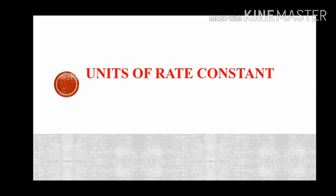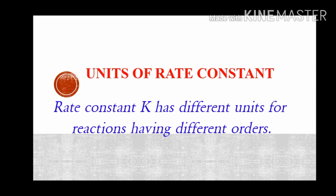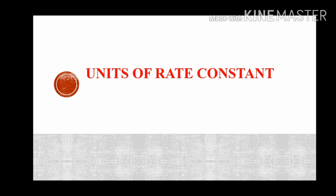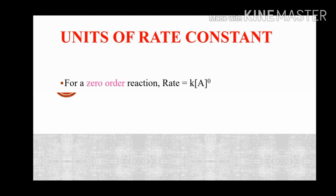Now let us discuss about the units of rate constant. Reactions with different orders have different rate constants — first order, second order, third order all differ. For a zero order reaction, the rate is equal to k into concentration of A raised to zero, so k equals rate divided by concentration raised to zero.